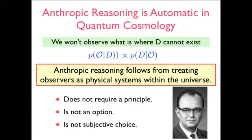Because the probability for an observation given data that described the situation by Bayes' theorem can be proportionally reversed. So if the probability is zero for D, we won't observe it. So we want to observe what is where we can exist. That's anthropic reasoning. Anthropic reasoning follows from treating observers in the universe as part of the whole thing and not somehow outside looking at it. That's not required a principle. It's not an option, and it's not a subjective choice.